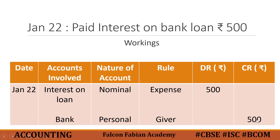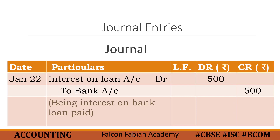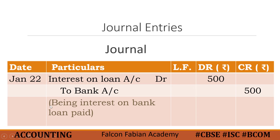Now let's record the entry in the journal. The date is January 22. The two accounts are interest on loan and bank. First we write the account to be debited: interest on loan A/C DR, and in the debit column write 500. In the next line, leave some space, write 'To', then bank A/C, and in the credit column write 500. The narrative is: being interest on bank loan paid.